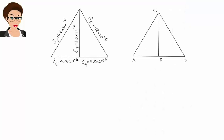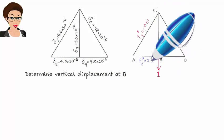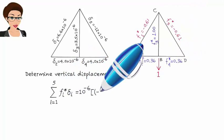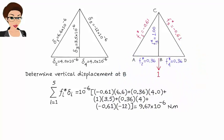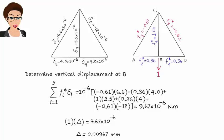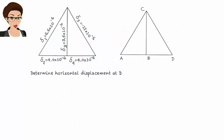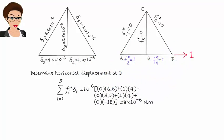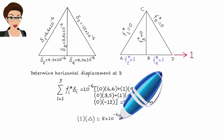To determine vertical displacement at b, place a unit virtual load in the vertical direction at b and determine the resulting member forces. The internal virtual work equals 9.67 times 10 to the negative 6. The virtual work equation then gives: 1 times delta equals 9.67 times 10 to the negative 6, where delta is the vertical displacement at b. So delta equals 0.00967 millimeters. Finally, to determine horizontal displacement at d, place a virtual unit load at d in the horizontal direction. The analysis gives horizontal displacement at d equals 0.008 millimeters.